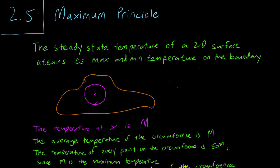And draw another circle around it. This circle must also have a circumference that has temperature M everywhere. We can keep doing this over and over again until we eventually reach the boundary.